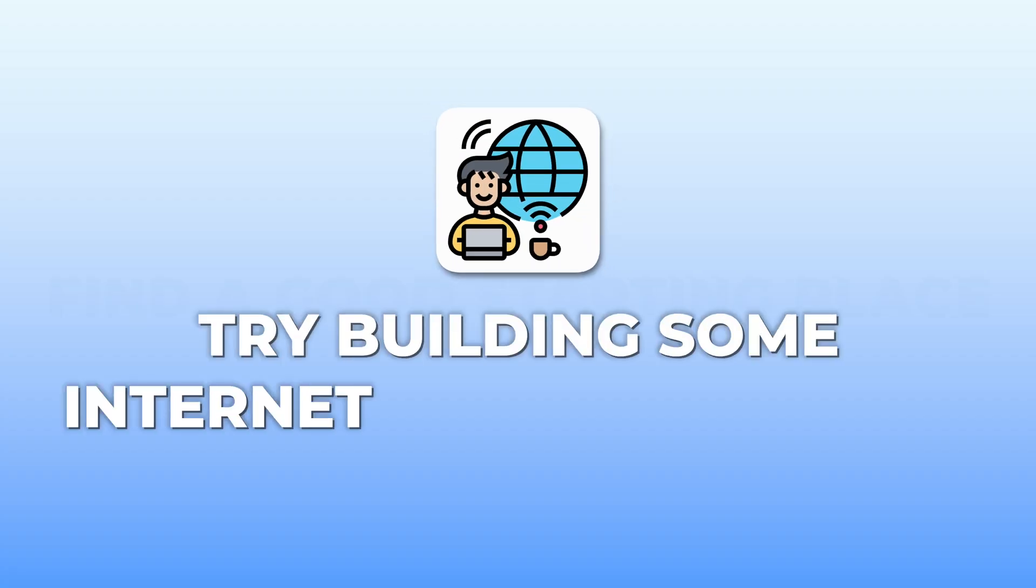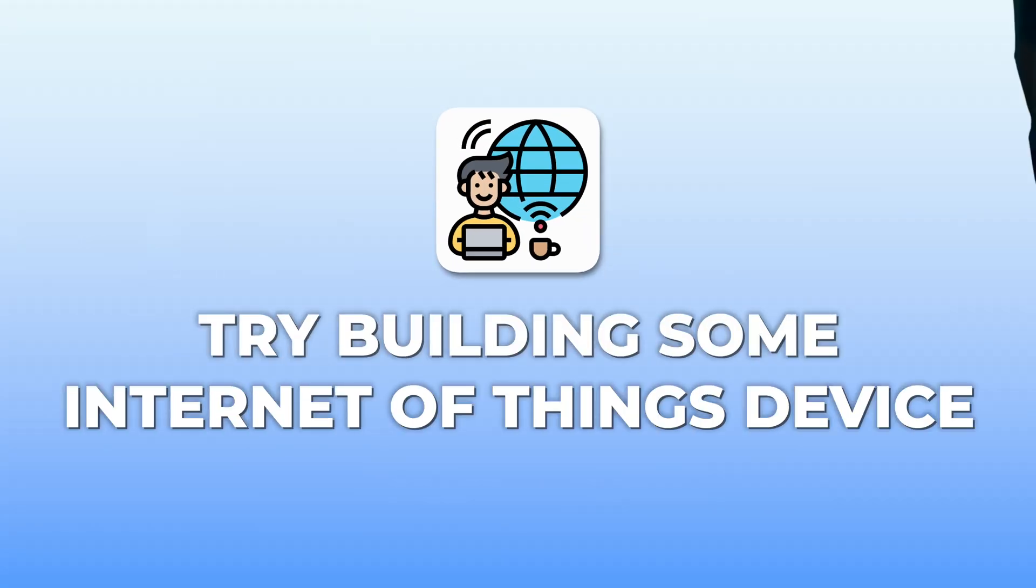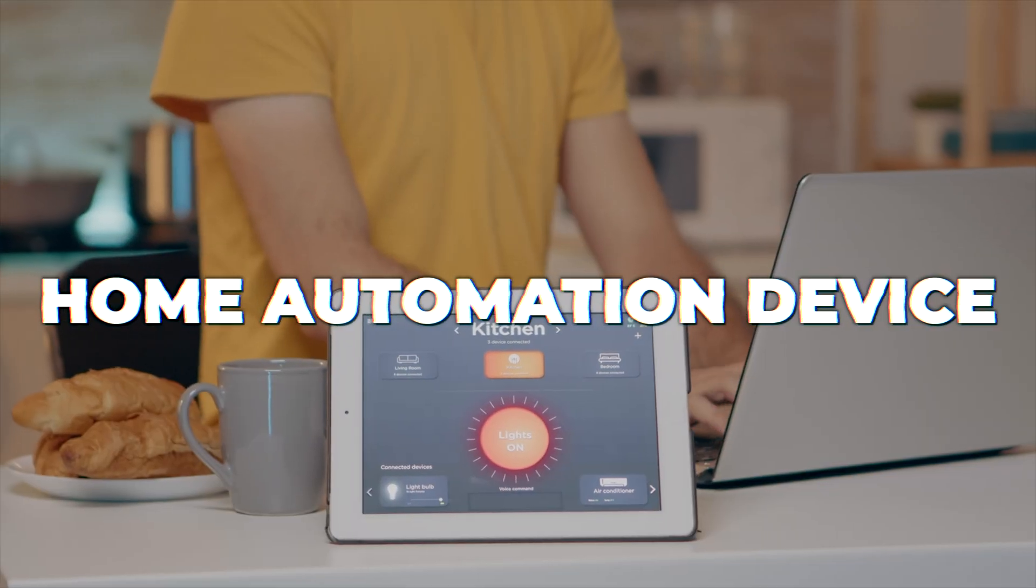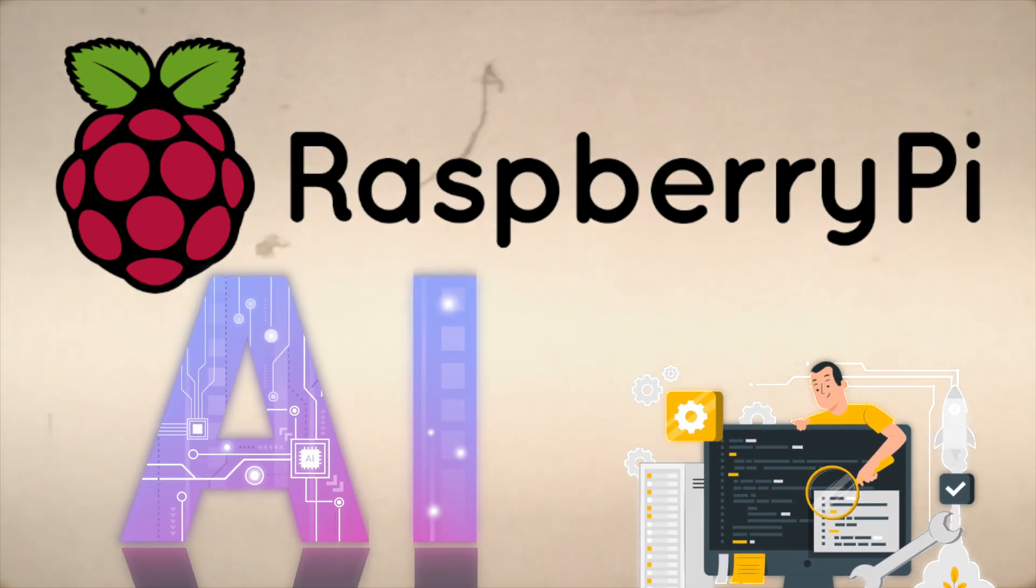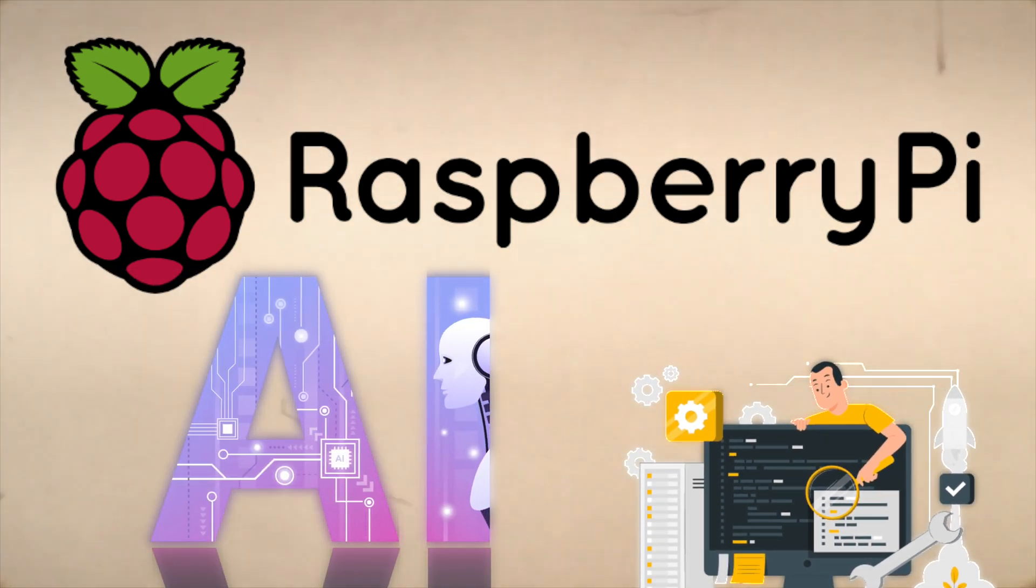First, an idea is to try building some Internet of Things device. So for example, try building some home automation device using a Raspberry Pi with some custom software. And if you want to be extra trendy, you could even try integrating it with some kind of AI.